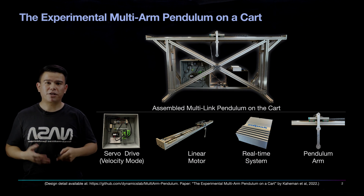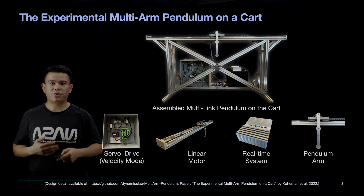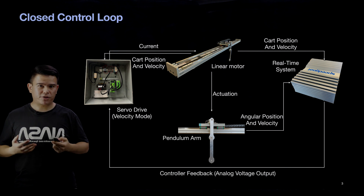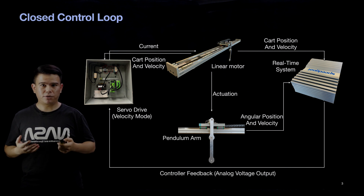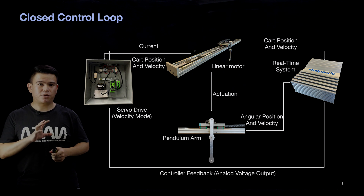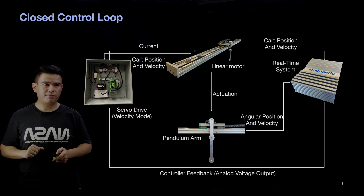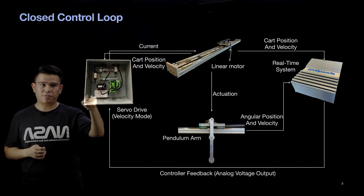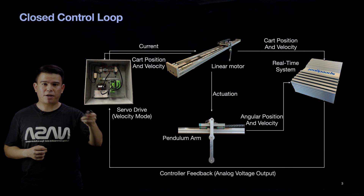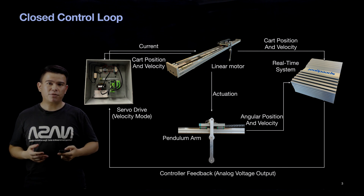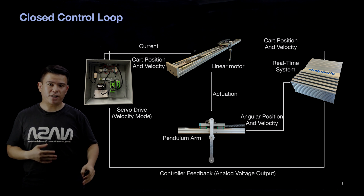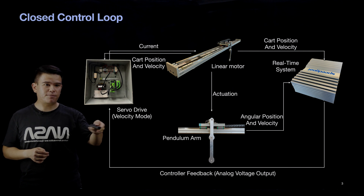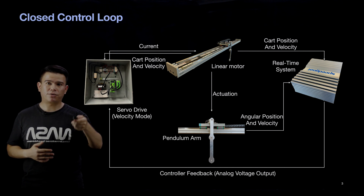As for the real-time system, it is responsible for gathering sensor information and also executing the user's controller. In order to achieve robust control, we perform closed-loop control, as you can see in this figure. At each time step, the real-time system gathers sensor information from the linear motor and also the pendulum arm, and determines how we should move the linear motor — at what desired speed — according to the user's control law.